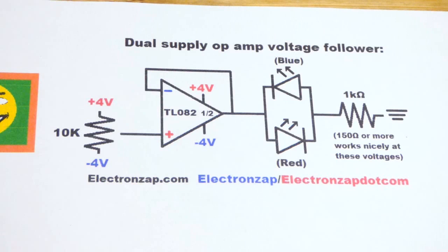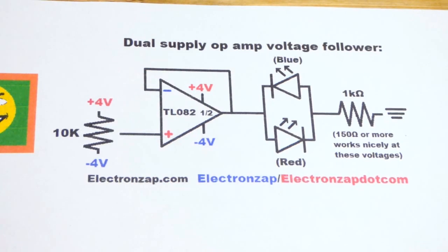But 1 kilo-ohm is a good general value. It'll work in a lot of circuits, so for quick putting together it's a nice value. But in any case, let's get to looking at it on the board.